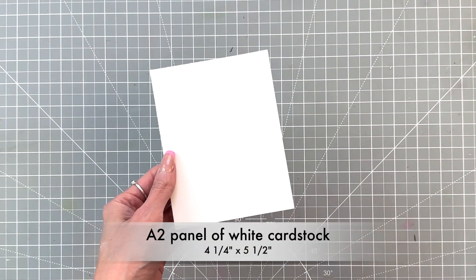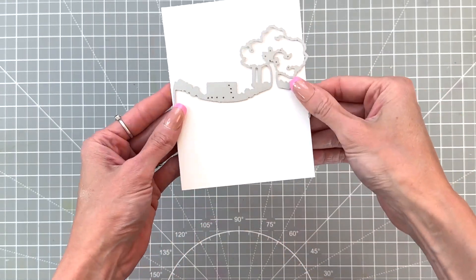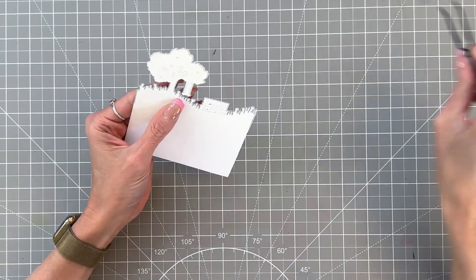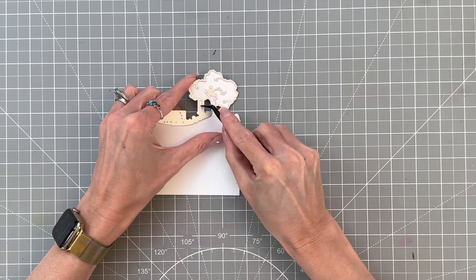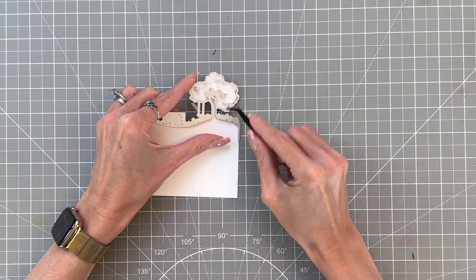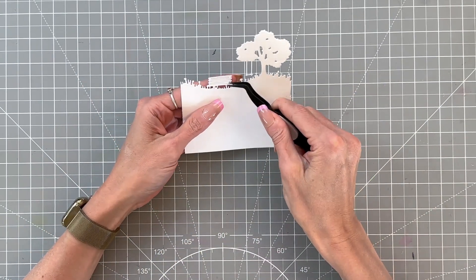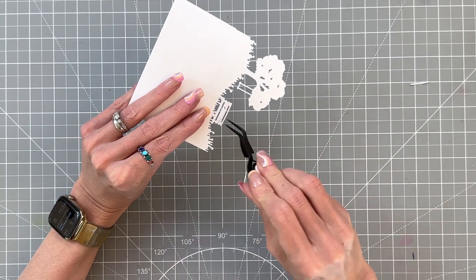I'm going to start with the tree and bench die from the trifold fancy die set and die cut an A2 panel of white cardstock about two-thirds up. This is going to be the back scene in my layering scene, so I want it to be the tallest, almost as tall as I could get for my A2 card base without that tree hanging off the top.